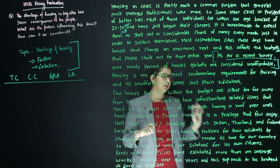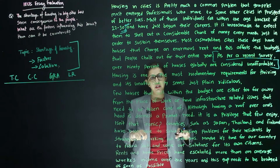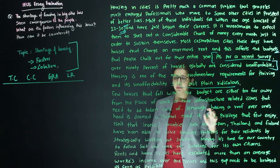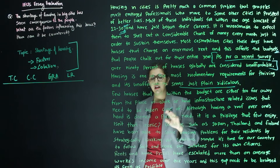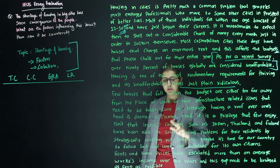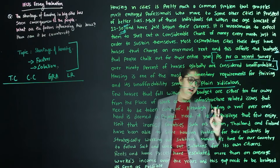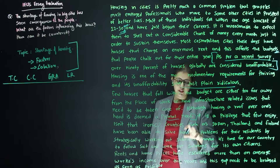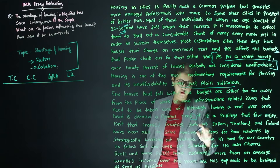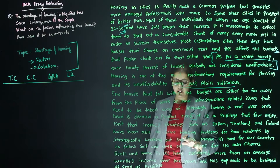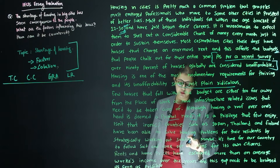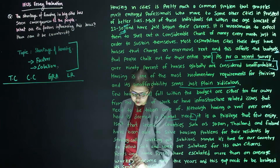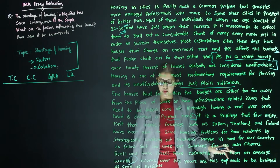'Housing is one of the most rudimentary requirements for thriving and its unaffordability seems just plain ridiculous. Few houses that fall within the budget are either too far away from the place of work or have infrastructure related issues. Although having a roof over one's head is deemed a primal need, it is a privilege that few enjoy. Isn't that ironic? Countries such as Japan, Thailand and Finland have been able to solve housing problems for their residents by strategically working out solutions. Maybe it is time for our country to follow suit. Rent and home prices have escalated more than an average worker's income over the years and this gap needs to be bridged as soon as possible.'